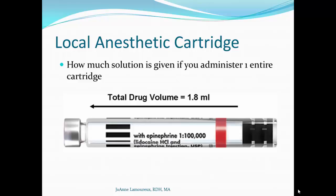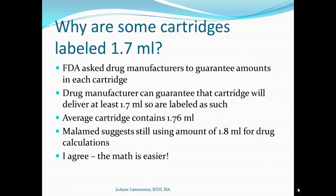As you probably know, a local anesthetic cartridge looks like this. For our purposes, we're going to say that the anesthetic cartridge contains a total volume of 1.8 milliliters if you administer the whole cartridge. However, the next slide will contradict that. Many of you may have realized that lately, local anesthetic cartridges, instead of being labeled 1.8 milliliters, are now labeled 1.7.